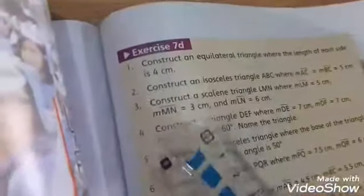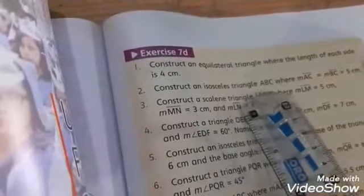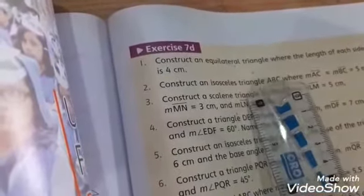In question number 2, construct an isosceles triangle. Isosceles triangle means that two sides are equal.